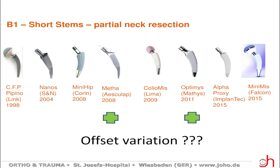There are some of these on the market. If we differentiate between them, there are some designs which offer the opportunity to modify the offset variation, either with different CCD angles like the Meta prosthesis, or with different types of offset — standard or lateralized — for example the Optimus stem. Other stems do not have this option.